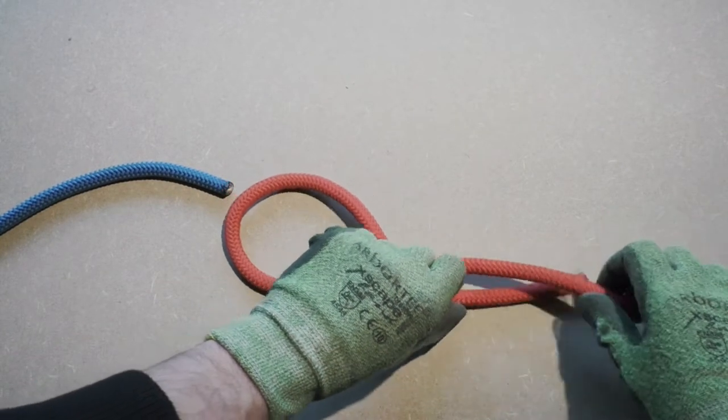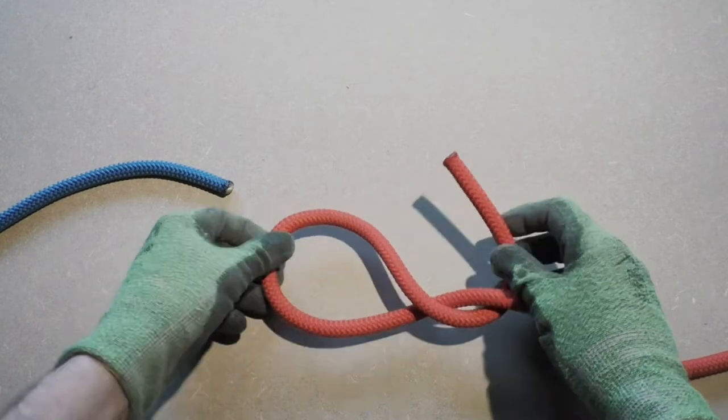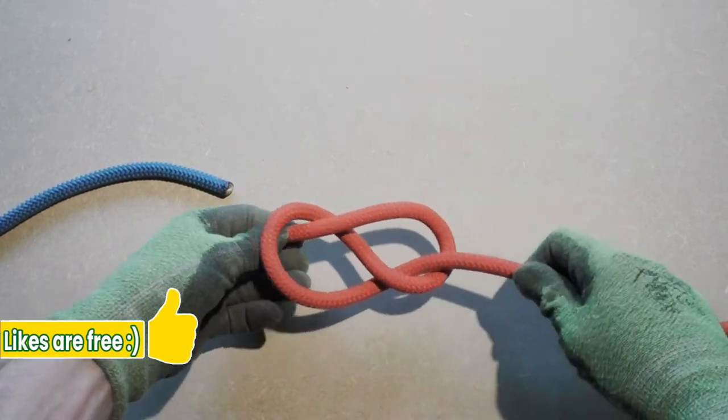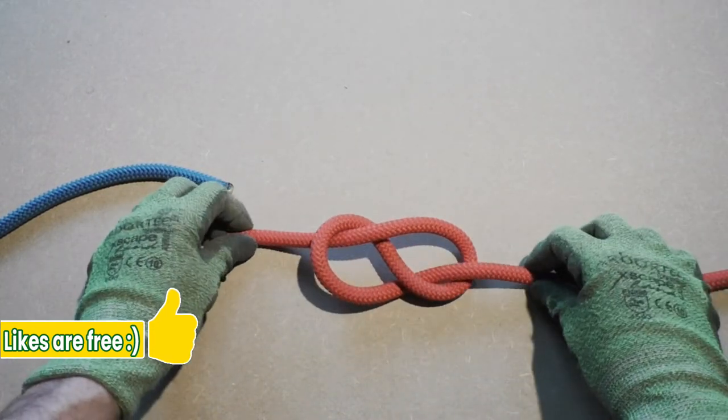Next, go around the standing part. We are tying a regular Figure 8 knot here. Finalize by pulling the working end through the loop. Don't tighten up this knot yet, as we need some space in the knot to work with.